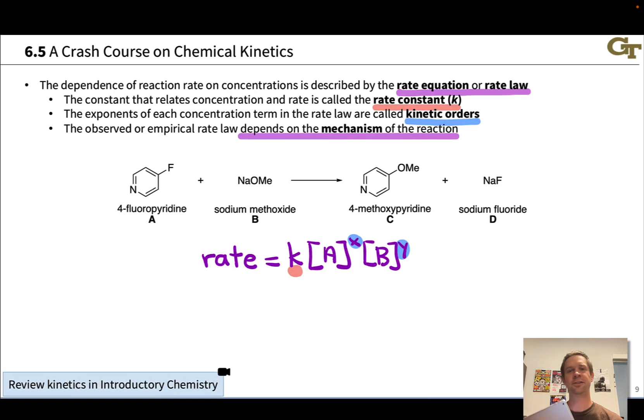So the point there is the two different mechanisms have different rate laws, and as such we can use a measured rate law to rule out mechanisms. For instance, if we saw zero-order behavior in B, or zero-order kinetics in methoxide, we would know that this, what we'll call concerted mechanism, with methoxide displacing fluoride all in one step, is not possible, and we can rule it out. And kinetics is very important for ruling out mechanisms in practice.